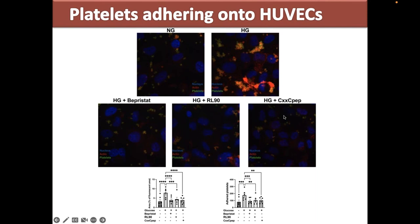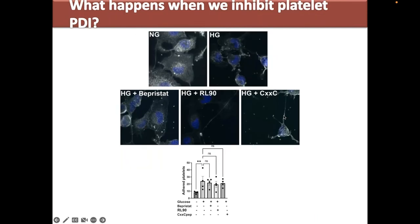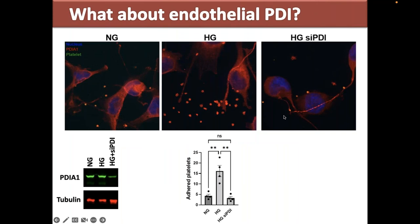The first question we asked was: is it platelet PDI or endothelial PDI that's relevant? When we incubate platelets with inhibitors, wash the inhibitors away, and then let those platelets adhere to HUVEC exposed to normal or high glucose, we don't see a decrease in the number of platelets adhered — suggesting platelet PDI alone is not the key factor. However, when we knock PDI down in endothelial cells using siRNA, we see a reduced number of adhered platelets. So we concluded that it is endothelial PDI that is relevant here, not platelet PDI.